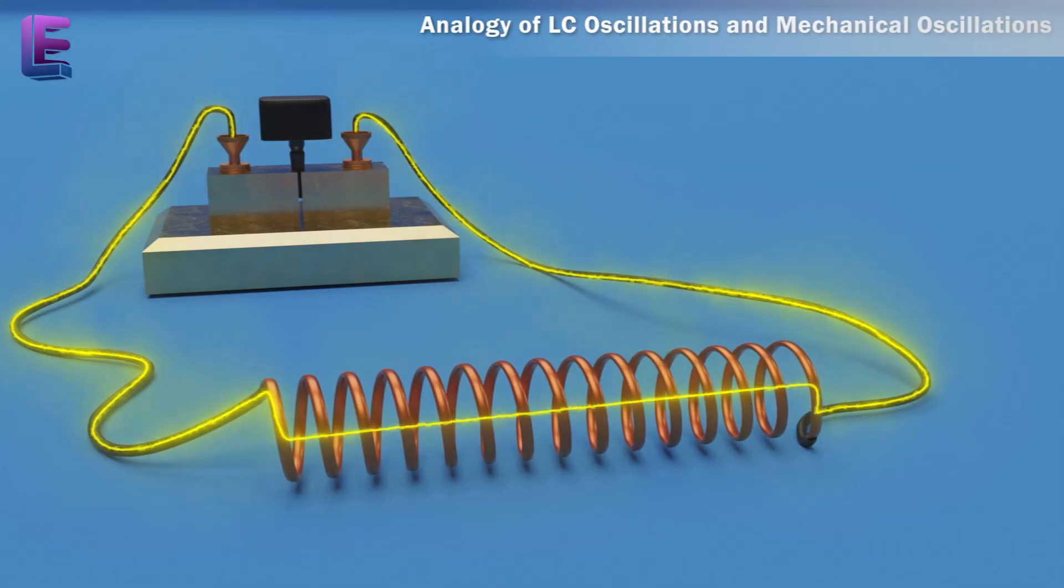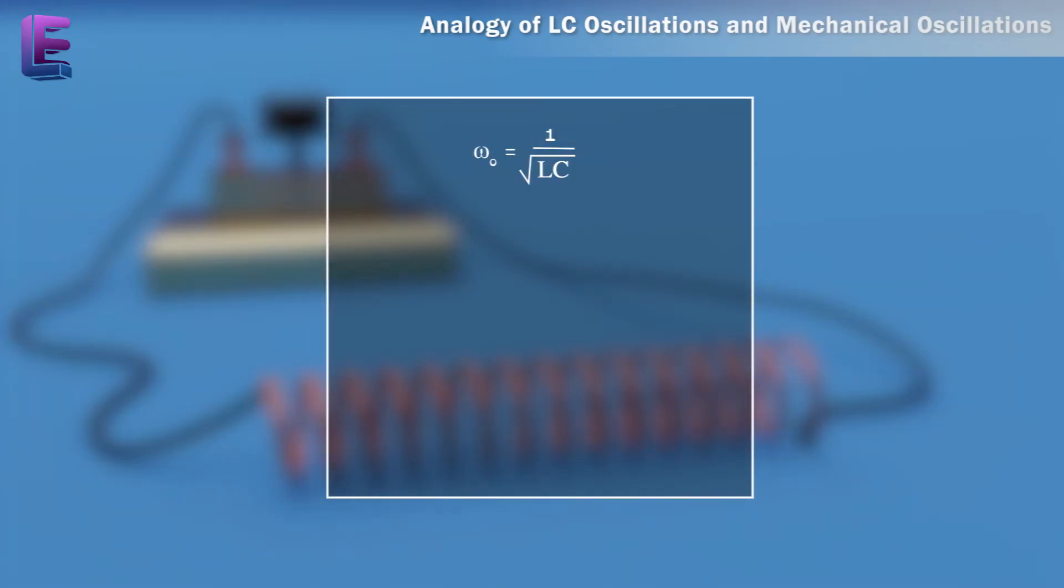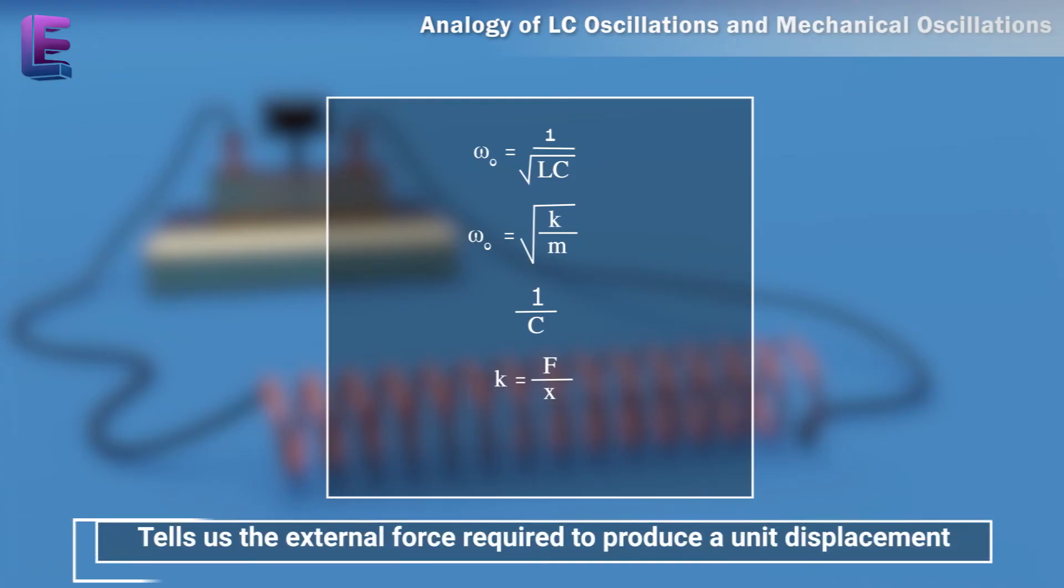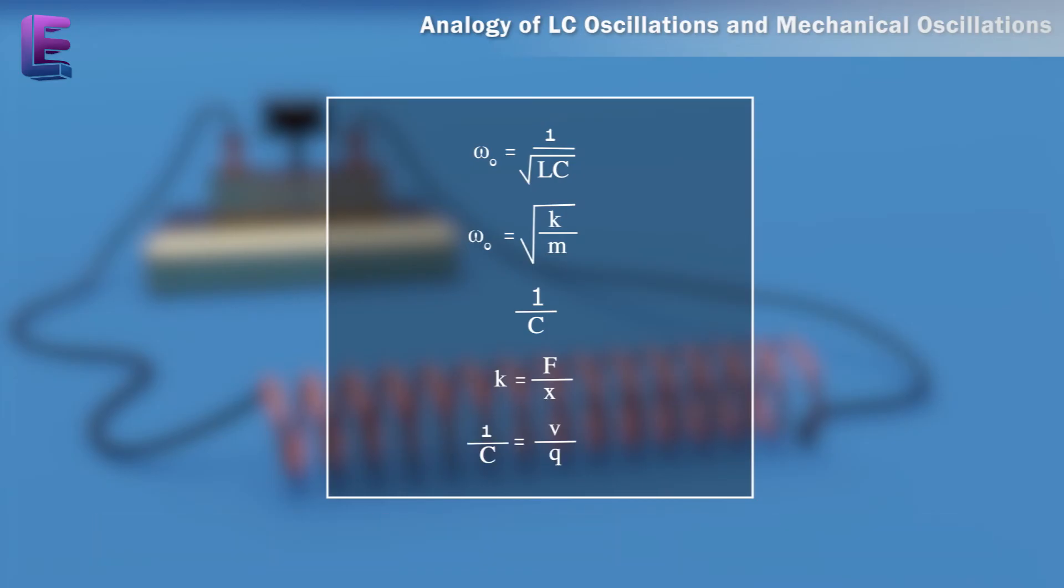L is a measure of resistance to change in current. In case of LC circuit, omega-0 equals 1 by root over LC. And as omega-0 equals root over k by m, 1 by c is analogous to k. The constant k equals f by x tells us the external force required to produce a unit displacement, whereas 1 by c equals v by q tells us the potential difference required to store a unit charge.